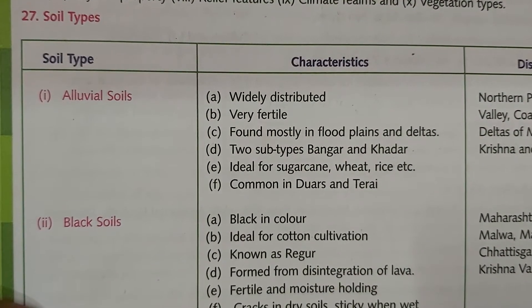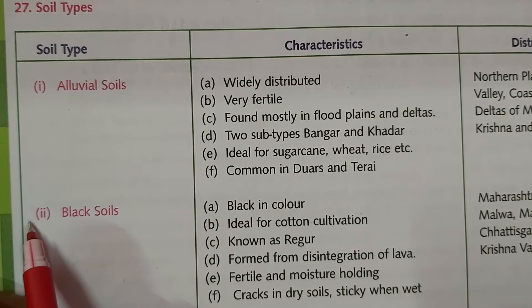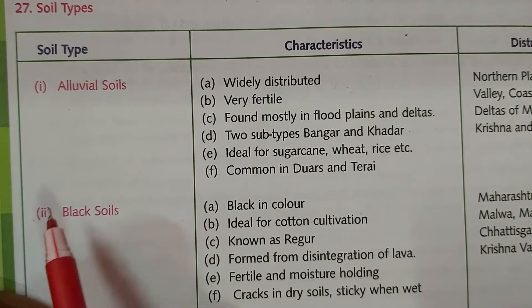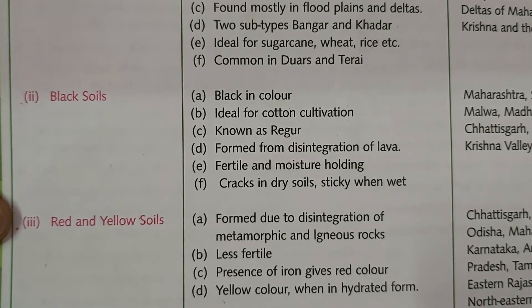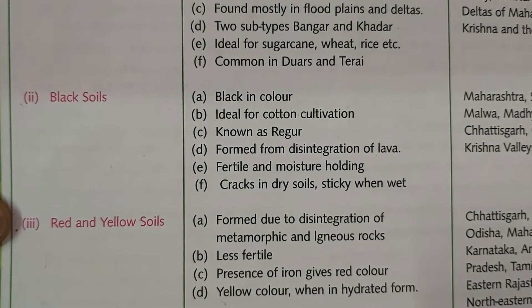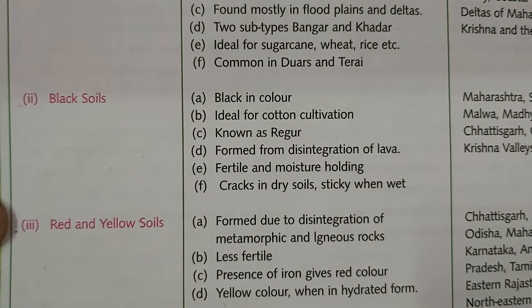The second soil we are going to discuss is black soil. It is black in color and ideal for cotton cultivation. It is known as regur, formed from the disintegration of lava. It is fertile and moisture-holding.